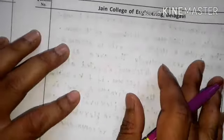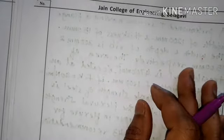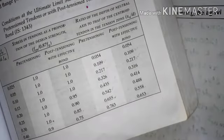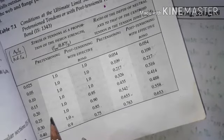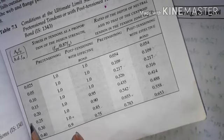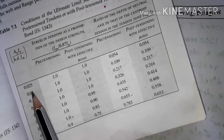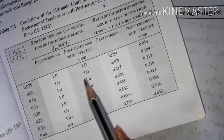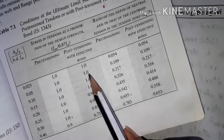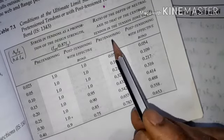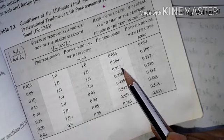Referring back to IS 1343 Table 11, ratio 0.098 lies between 0.05 and 0.1. We must interpolate. For the pre-tension column, at 0.05 the XU/D value is 0.109, and at 0.1 the XU/D value is 0.217. We interpolate to find XU/D for 0.098.